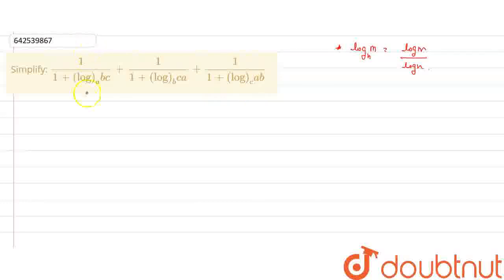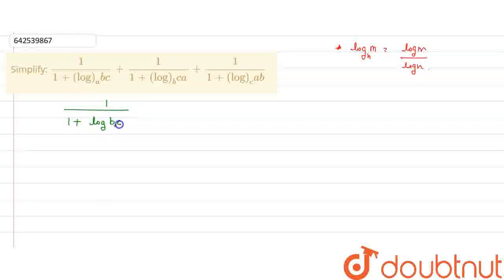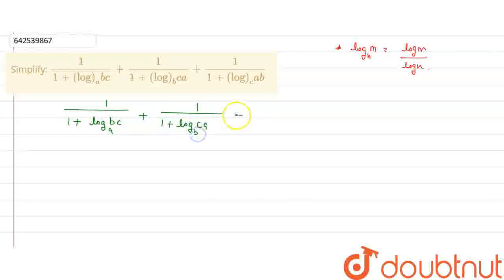We will rewrite it as 1 upon 1 plus log bc base a, plus 1 upon 1 plus log ca base b, plus 1 upon 1 plus log ab base c.